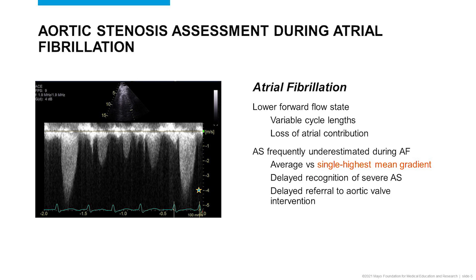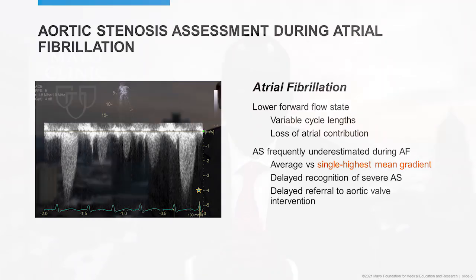We were surprised because the difference in mean gradients could be 10 to 15 millimeters of mercury, which is a lot. So you have someone in atrial fibrillation with low-gradient aortic stenosis and a normal ejection fraction, and then that same patient after cardioversion adds 10 to 15 millimeters of mercury to the gradient. You can't say the patient has less than severe aortic stenosis when in atrial fibrillation and severe aortic stenosis when in sinus rhythm — that patient has severe aortic stenosis during atrial fibrillation. They just can't demonstrate it because of impaired cardiac performance.